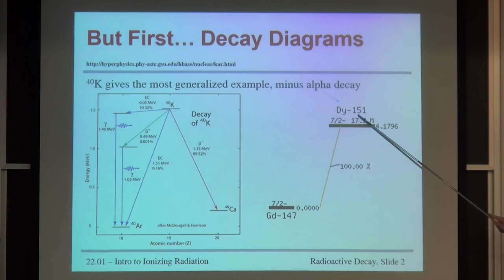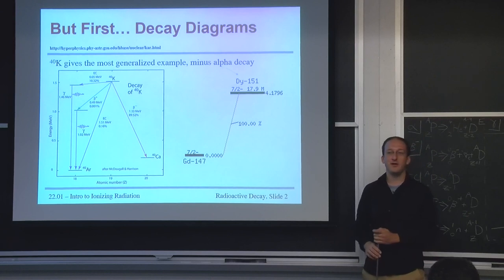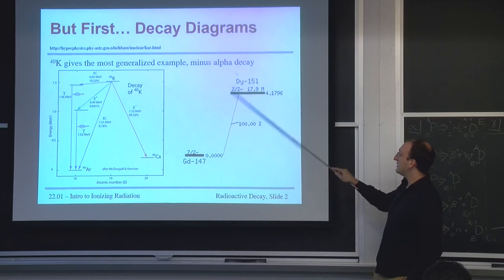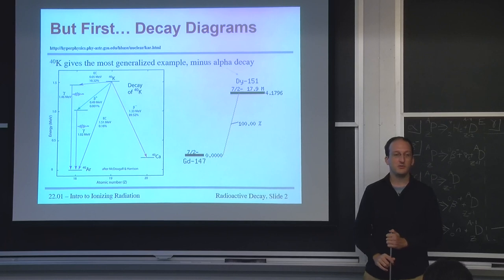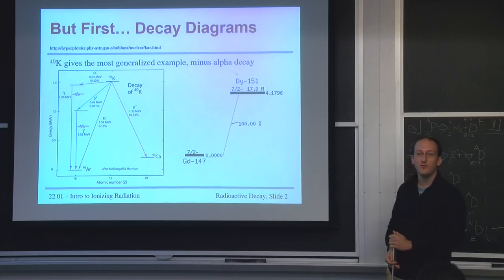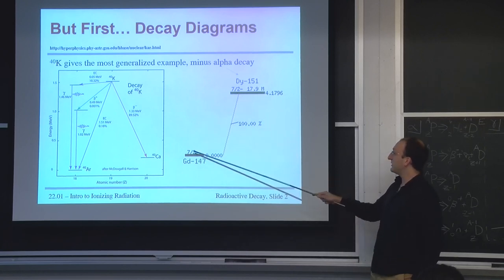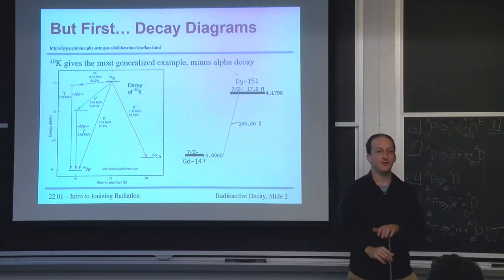You also might notice a pattern that most alpha particles tend to come out around 4 MeV or larger. These percentages tell you the probability that each decay will happen. These are usually measured. The half-life will be given up here. And the last thing are the spin states of the initial and final nuclei, which you will cover in 2202.